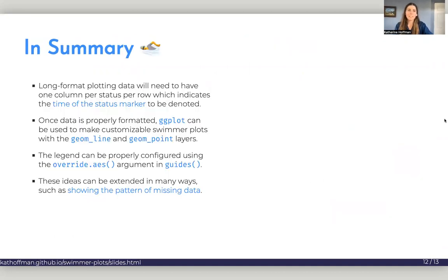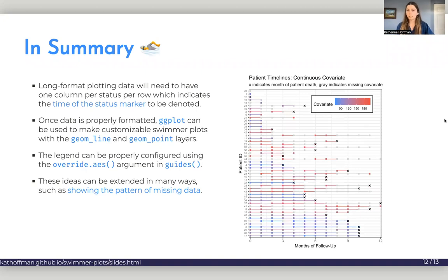So in summary, long format plotting data needs to have one column per status per row that indicates the time of the status marker if you want it to be denoted. And once you've got your data properly formatted like that, ggplot can be used to make very customizable swimmer plots with the geom_line and geom_point layers. The legend can be properly configured using override aesthetic from in the guides layer. And these ideas can be extended in many ways, such as showing patterns of missing data.